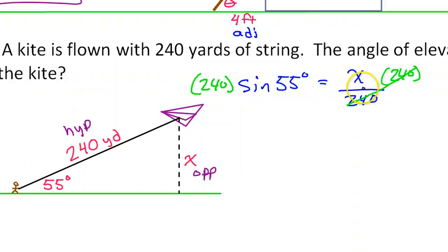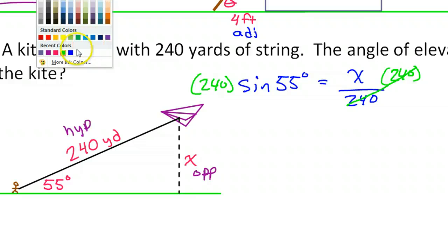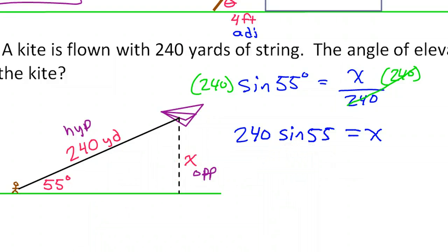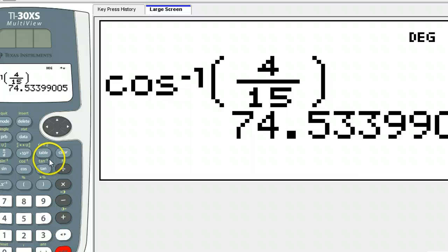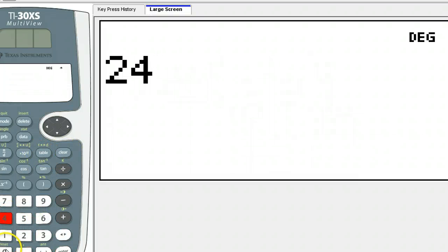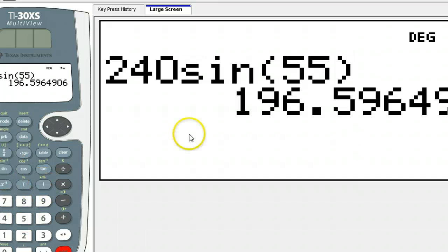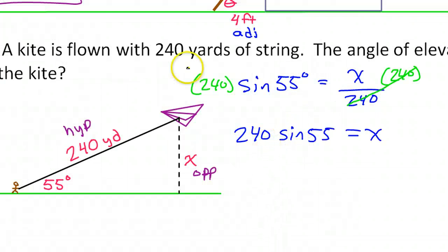Multiply both sides by 240 — that way these will cancel out, leaving us with 240 times sine 55 equals x. You can just put this in your calculator: 240 sine 55. So that is 196.6 — gotta round up — 196.6 yards.